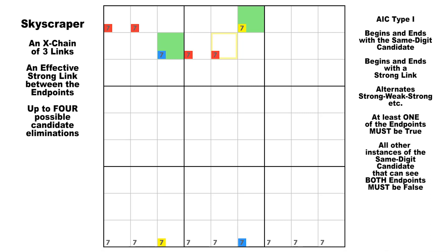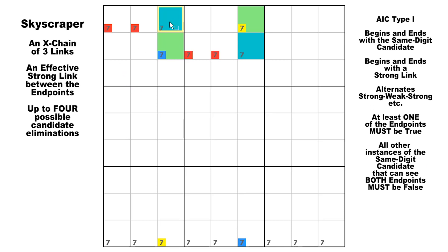You can start on either end of the chain and apply the same logic, and the net result is exactly the same — it's like a mirror image. Notice that there are two other cells that can see both endpoints, right here and right here. But if there were a candidate seven in either one of those cells, it would ruin this pattern because the strong links in column three and column six would be negated by the presence of a third candidate seven.